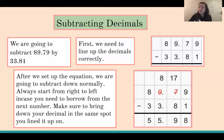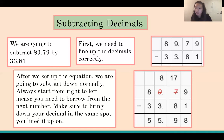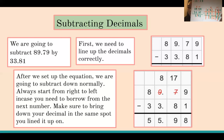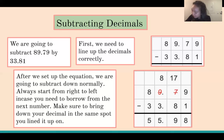Since I had to borrow that 10, I now have 8 minus 3 instead of 9 minus 3, which gives me 5. Our last column is also 8 minus 3, which is again 5. So the final answer is 55.98.